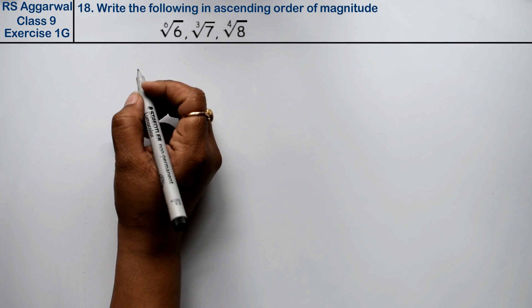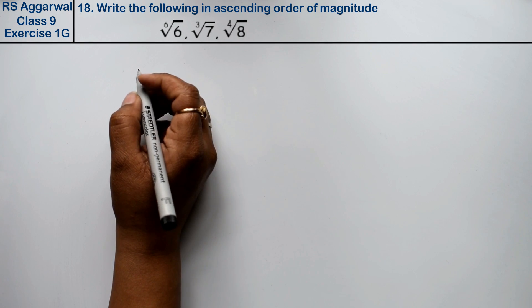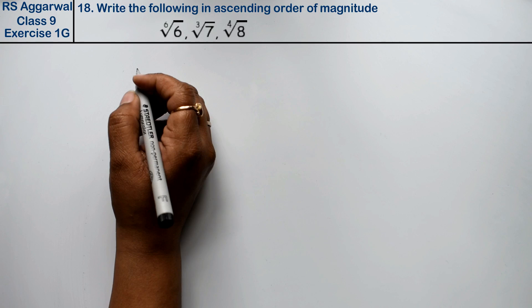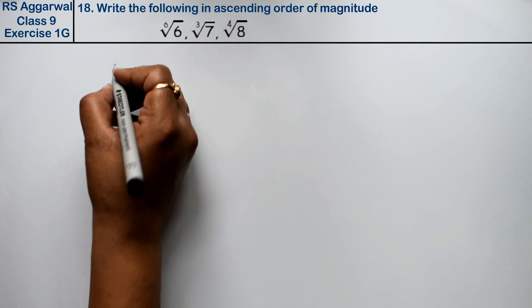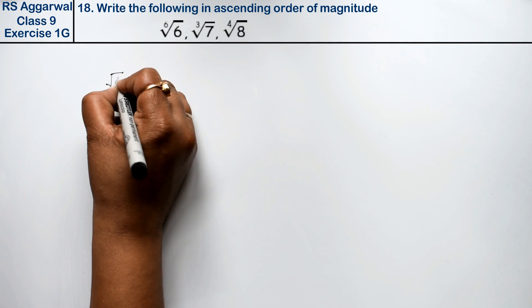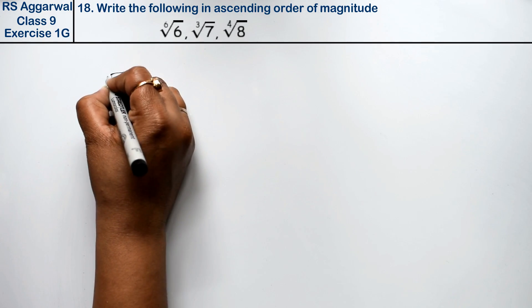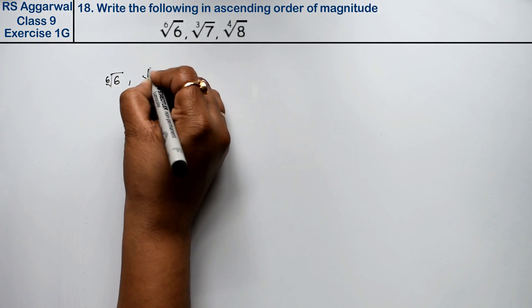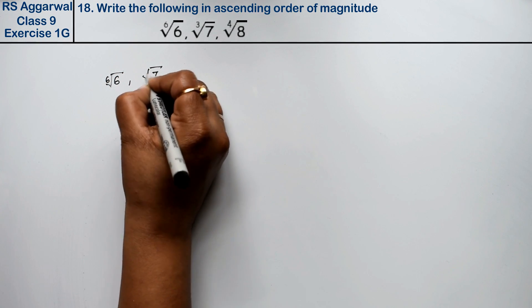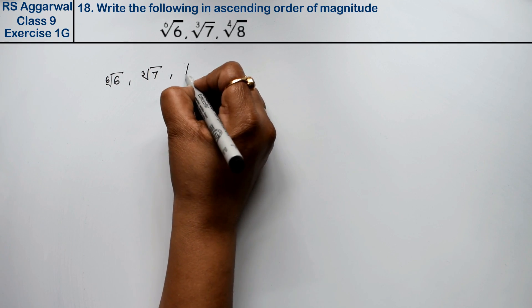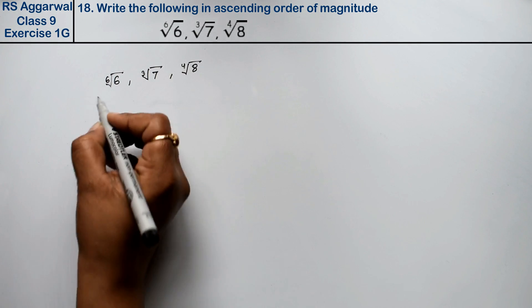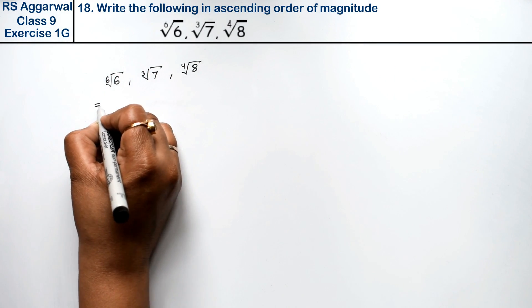Let's do question number 18 of Exercise 1G, that is Number Systems. Question number 18 is: write the following in ascending order of magnitude. Here we have ⁶√6, ∛7 (cube root of 7), and ⁴√8 (4th root of 8). We have to write them in ascending order.